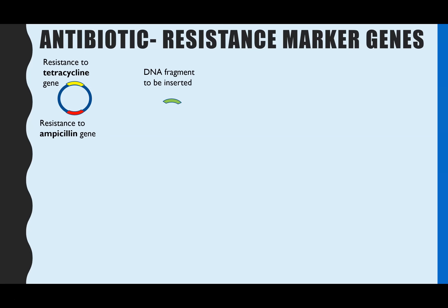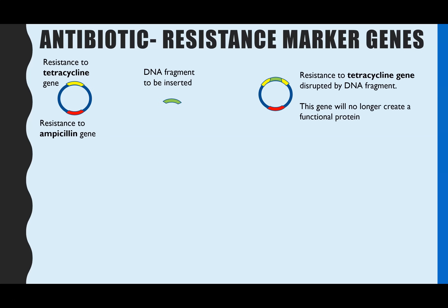For the antibiotic resistance method, you would insert into the bacterial plasmid a gene that makes the bacteria resistant to the antibiotic tetracycline, and also a gene to make it resistant to the antibiotic ampicillin. Next, you insert into the plasmid the DNA fragment that you've isolated that you want to clone. In this case, it's deliberately inserted in the middle of the tetracycline gene.